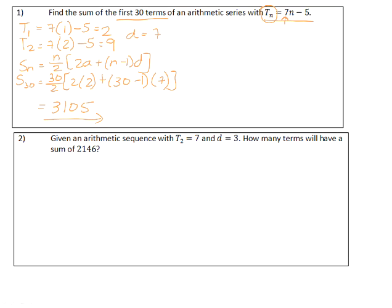Question 2. Given an arithmetic sequence with term 2, so we know that the sequence is arithmetic, term 2 is equal to 7, and the difference is equal to 3. How many terms will have a sum of 2146? Now, whenever we see the word sum, we know that we have to work with the series. The series gives us the sum of the terms of a pattern. So in order to use our series formula, we need to know the first term and the constant difference. Constant difference is given, and we were told that term 2 is equal to 7.